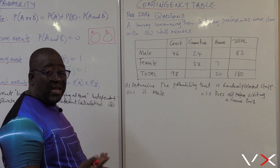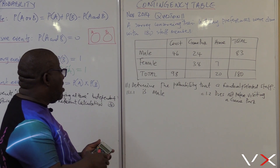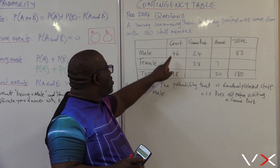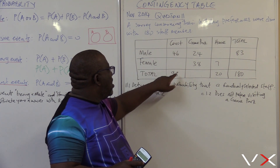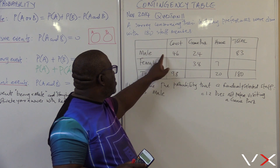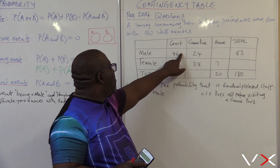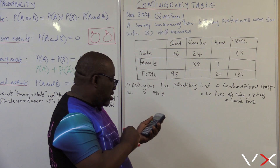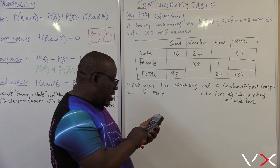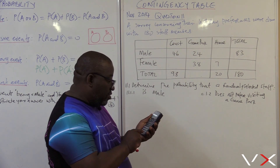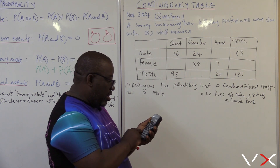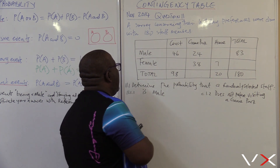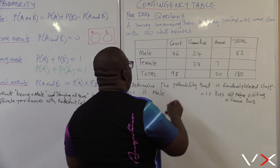There are spaces in between — one question might require you to find those. If you look at the total that wants to go to the coast, it's 98, but we've got 46 males. So how many females? It's easy to calculate: 98 minus 46, which gives us 52. So the value here is 52.